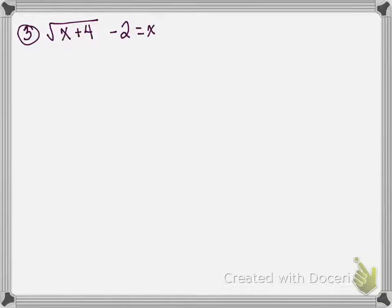This is number 3 on our chapter 3 and 4 test review. It is the square root of x plus 4, minus 2, where the minus 2 is outside the parentheses, equals x. The first thing we do is make sure we get the negative 2 on the right side of the equal sign.